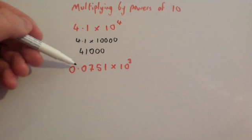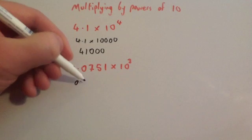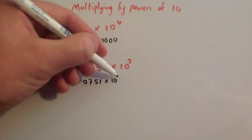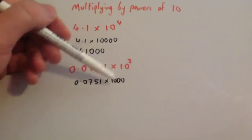Now finally, 0.0751 multiplied by 10 cubed, well that would be 0.0751 multiplied by 1,000 because 10 cubed is 1,000. Notice the connection between the power of 3 and the answer.